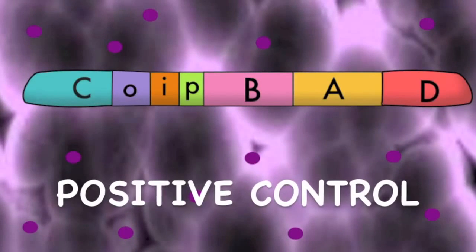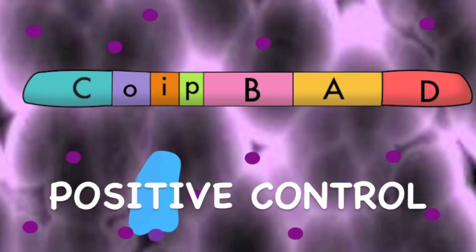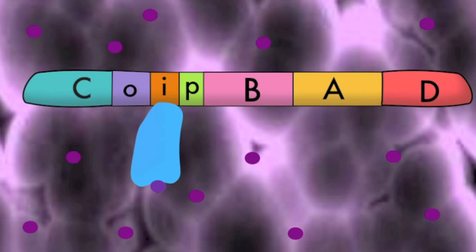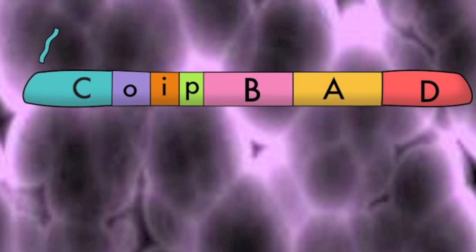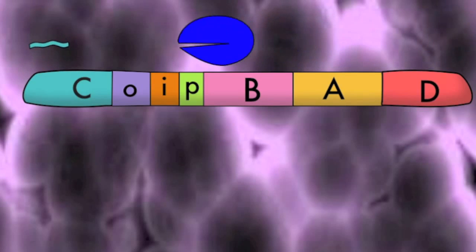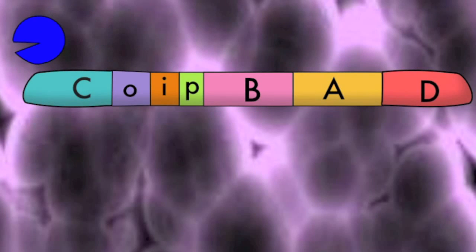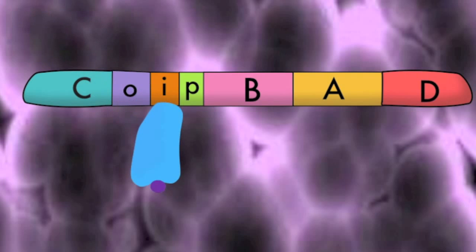Positive control. When arabinose is present in the cell, it binds to the ARAC protein, which forms a complex that binds to the ARAI site. When no ARAC protein is present, RNA polymerase binds to the operon to make mRNA that codes for this protein. This mRNA is then translated by a ribosome into the ARAC protein. With the ARAC protein bound to the ARAI site, transcription can occur, but only at a very low rate.